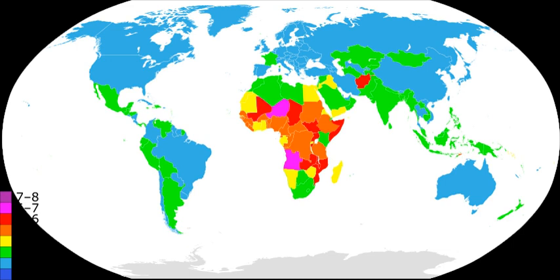In his book The Ultimate Resource, economist Julian Simon argued that higher population density leads to more specialization and technological innovation, which in turn leads to a higher standard of living. He claimed that human beings are the ultimate resource since we possess '...productive and inventive minds that help find creative solutions to man's problems.'